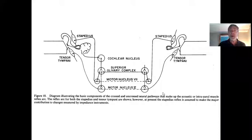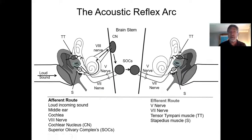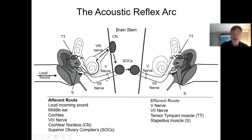A loud sound in one ear causes an acoustic reflex in both ears. A loud sound in the other ear causes an acoustic reflex in both ears. Why? Because messages cross over — as well as going the same side, they also cross over. The fifth cranial nerve goes to the tensor tympani; the seventh cranial nerve goes to the stapedius, and the same thing happens on the other side.